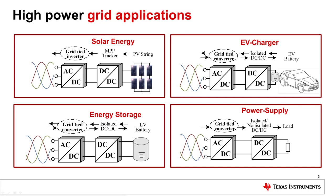In solar applications it can convert DC power from solar panels to provide green power to the AC grid. It can charge an EV battery from the AC grid. In storage applications, the grid tie converter can level power usage on the grid by charging a storage battery when there is excess power available, or supplying power to the grid during peak loads. It is also a PFC front-end converter for high power supply applications that require three-phase AC input.